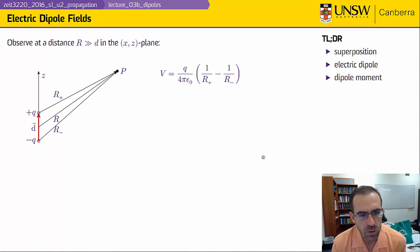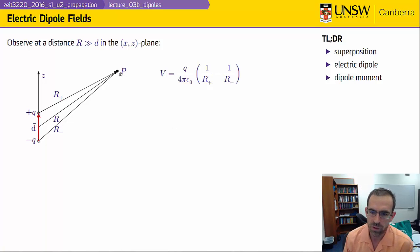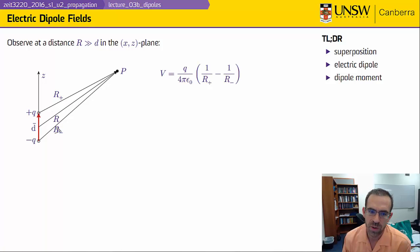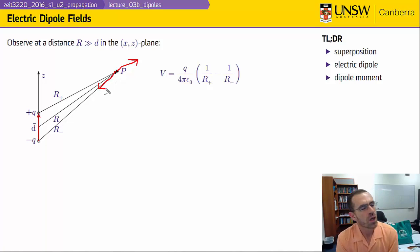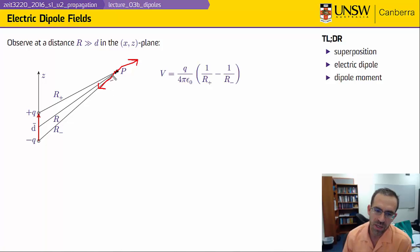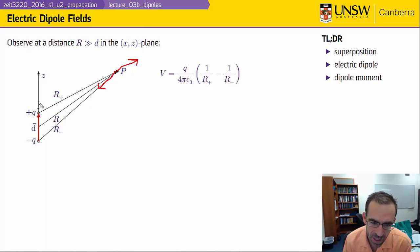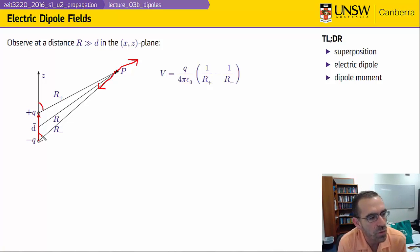To compute the fields, we assume we're observing at a distance r that is much, much greater than d. I'm interested in knowing the fields at observation point P. I've got a distance r+ to the positive charge and r- to the negative charge. From Coulomb's law I have an electric field due to the positive charge and an electric field due to the negative charge. Those two fields are almost equal and almost opposite — but not exactly, because I'm a little bit closer to the positive charge, and the angles to r+ and r- are slightly different. Because of that, I have a small residual electric field.